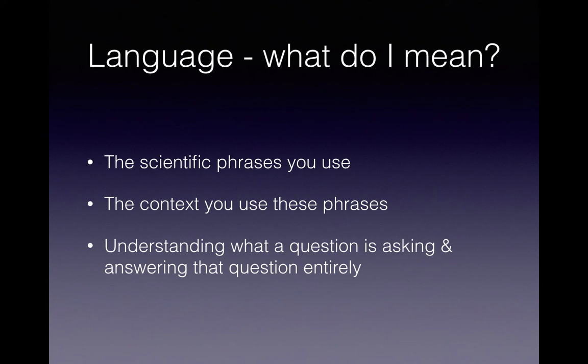What I mean by language use in physics is three things. One, that you're using the correct scientific phrases. Two, that you're putting these phrases in the correct context and also the correct grammar. And three, understanding what the question is saying exactly and answering the question entirely.